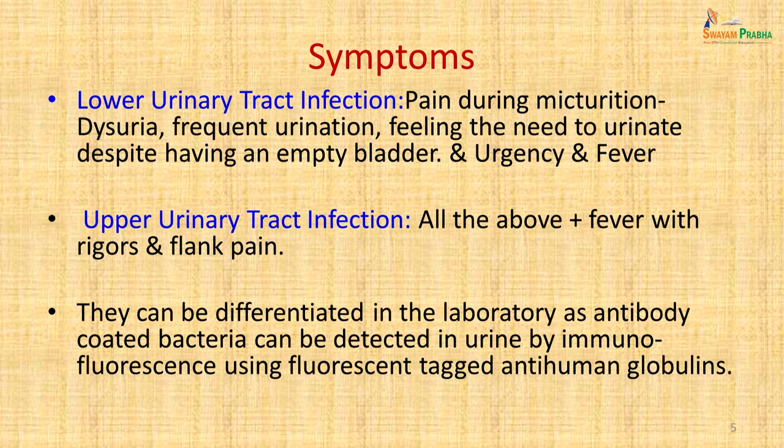The two infections can be differentiated in the laboratory as antibody-coated bacteria can be detected in urine by immunofluorescence using fluorescent-tagged anti-human globulins. This will occur only in upper urinary tract infection because as the bacteria pass through the kidneys, they get coated with antibodies and can be detected. In lower urinary tract infection, these antibody-coated bacteria cannot be detected.